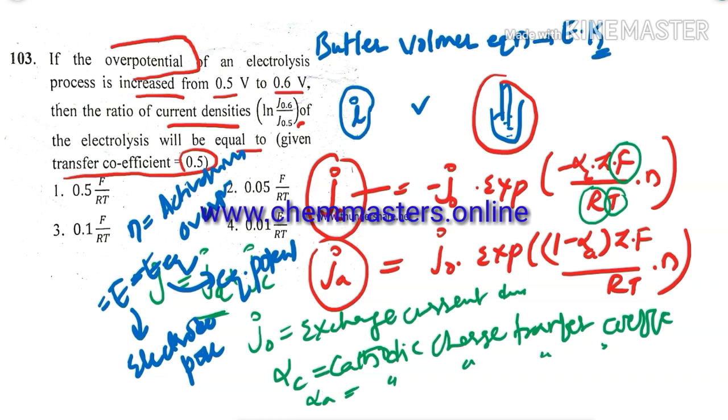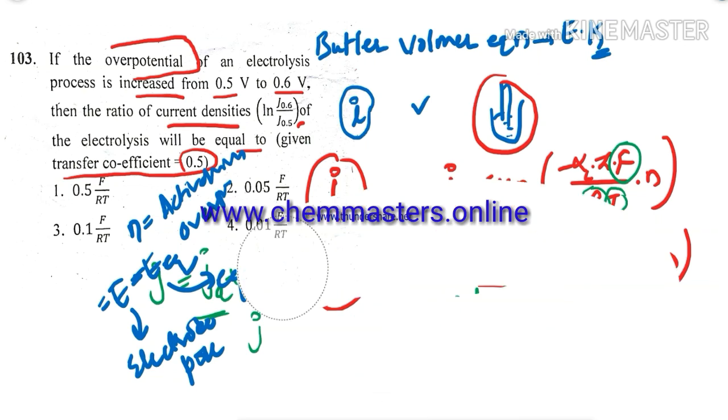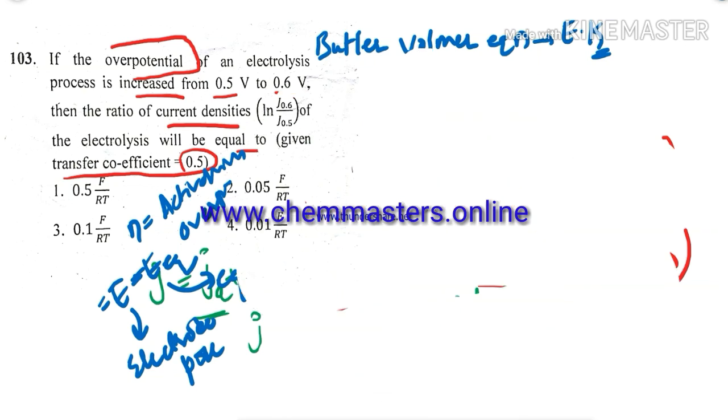So just take here, we are just taking J. So it may be cathodic or anodic, because here we have given with transfer coefficient, but it is not particularly mentioned for anodic or cathodic. So just take J. So just take J electrode, then whenever we take that J0 here, so exponential.